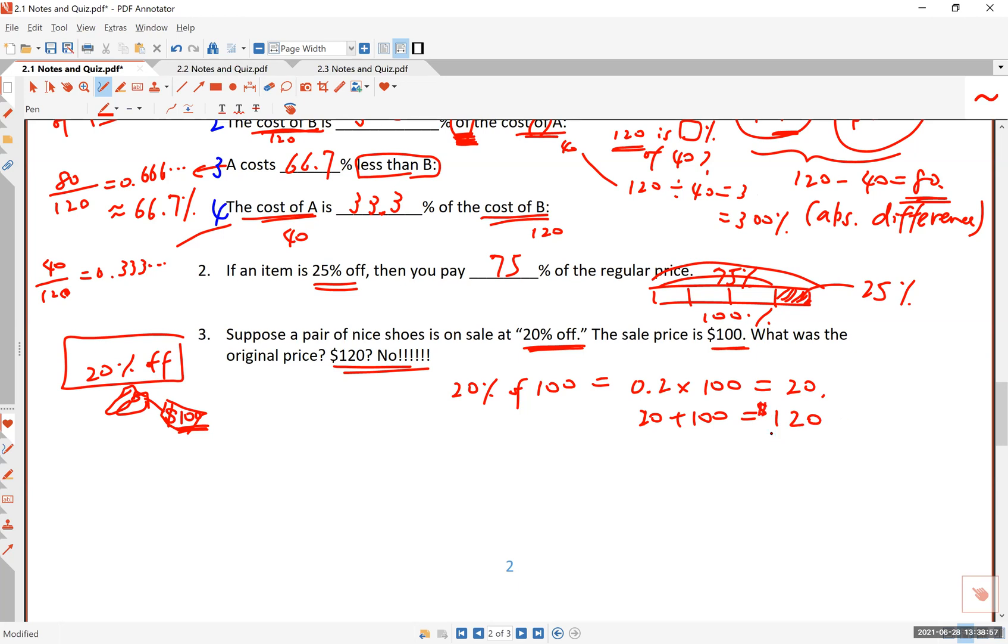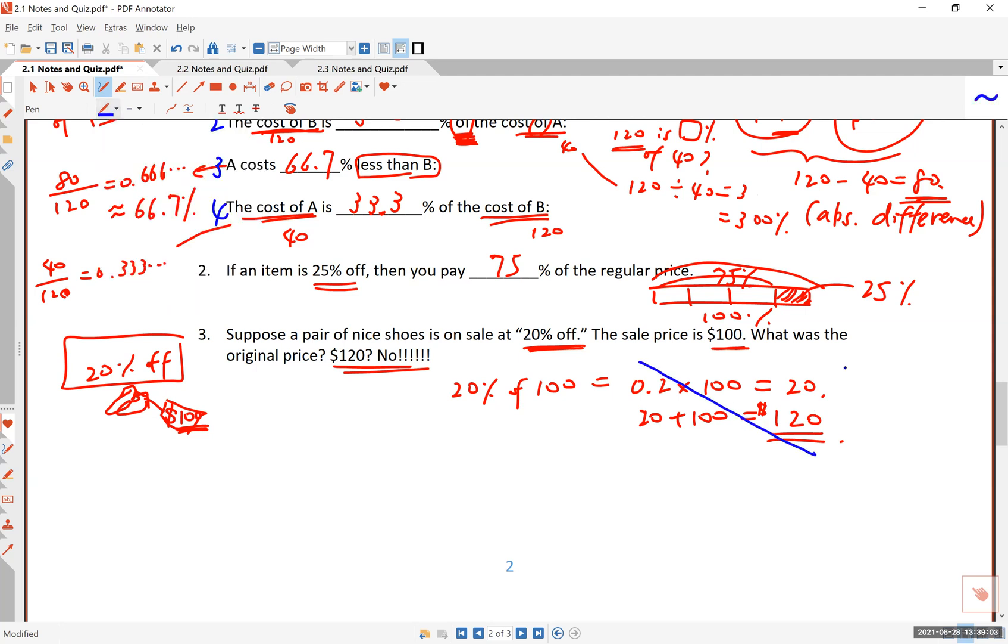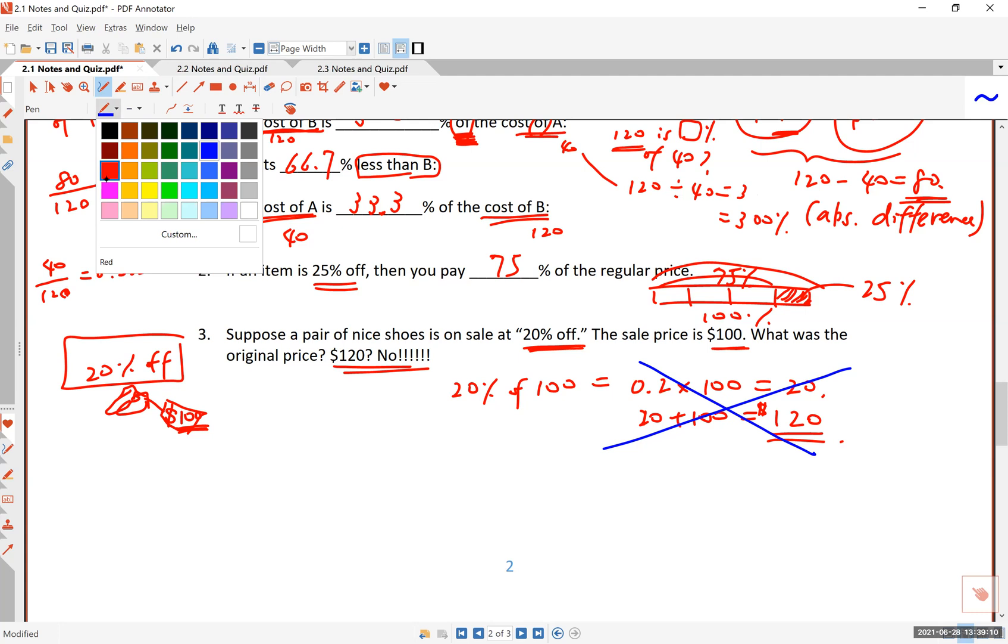A typical person would calculate 20% of 100, that's 0.2 times 100, and that's 20. And so $20 must be the price of the discount. And so the answer is 120. That is what a typical person would say. I want you to know this is wrong. Now, don't erase it. Sometimes it's very important for you to see the wrong way of doing things. And this is one classic example.